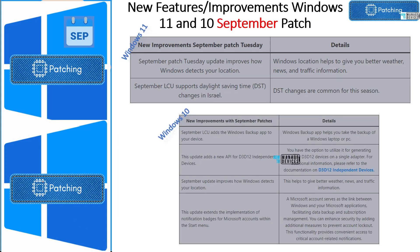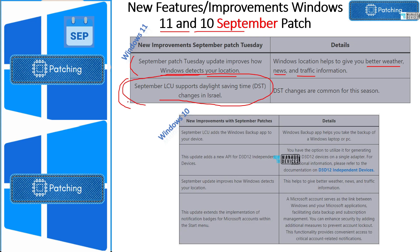Now let's look at the features and improvements associated with Windows 10 and Windows 11 September patches. There are no significant updates for Windows 11. One improvement is a Windows location-related update that will help with accurate news, traffic information, and climate information. The other improvement is daylight saving time for Israel. These are the two improvements visible in the Microsoft documentation for Windows 11.